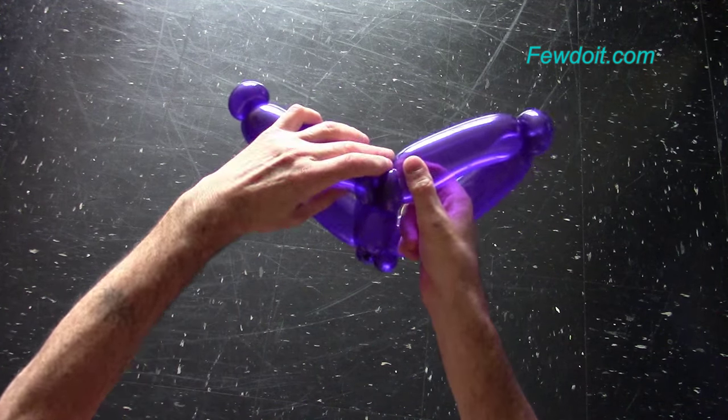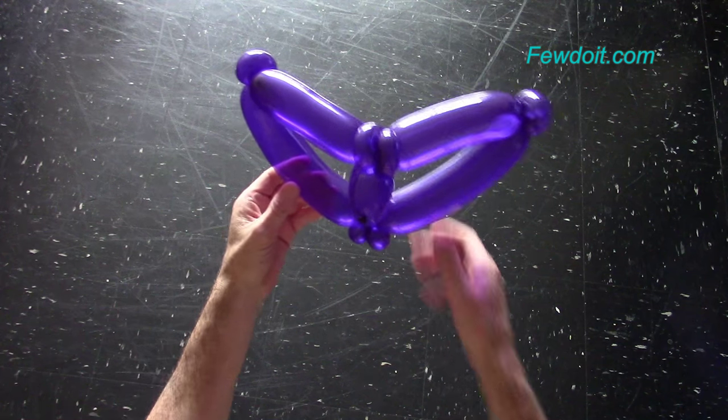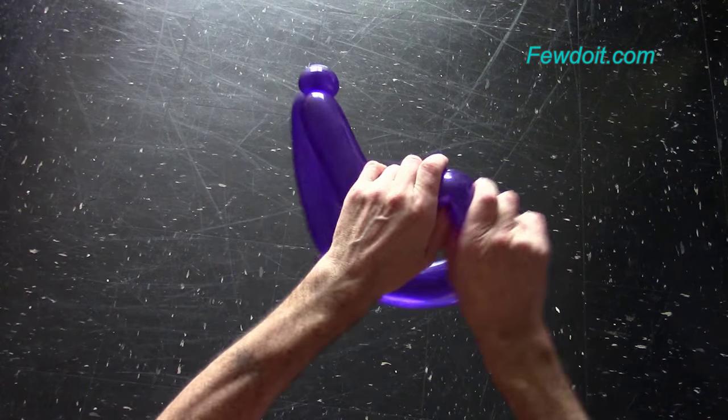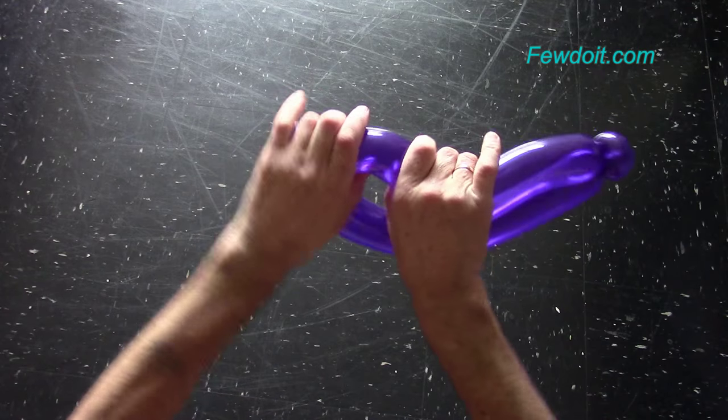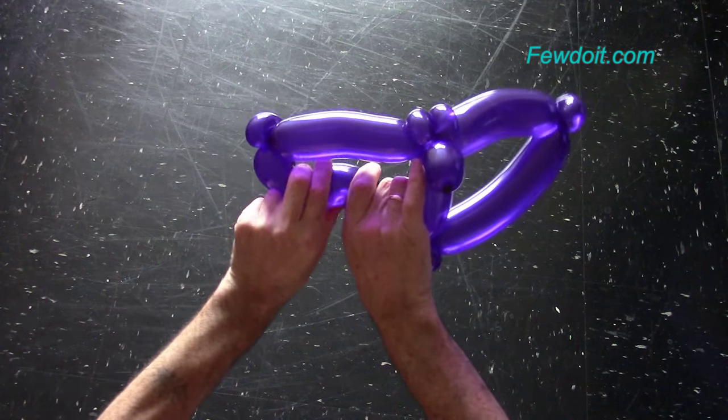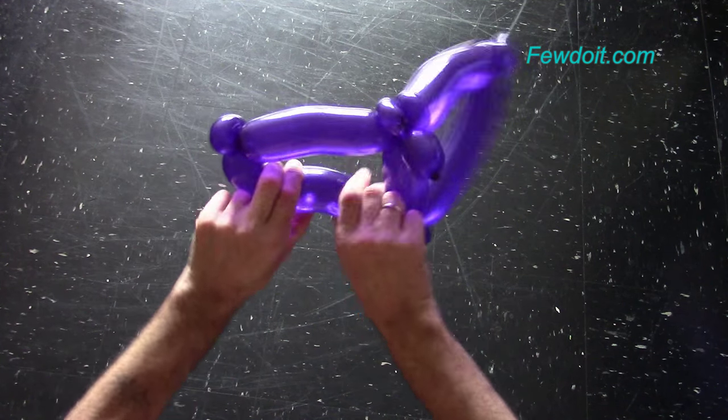We can shape the wings in different ways. We can bend the fourth and the eighth bubbles just like that. Also we can bend the sixth and the tenth bubbles.